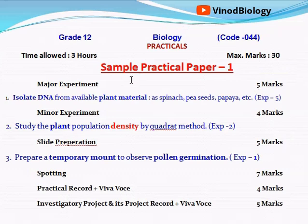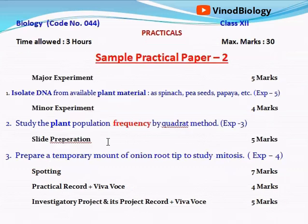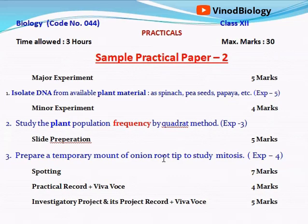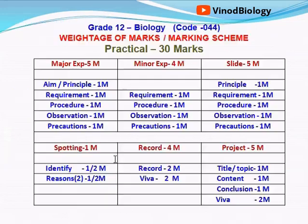Looking at a sample SIP paper: Set D has isolation of DNA as common, plant population density by quadrat, and a temporary mount of pollen germination. In a second set example, frequency is taken instead of density, and onion root tip is taken instead of pollen. So the only difference between sets is in these two components.